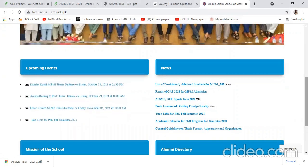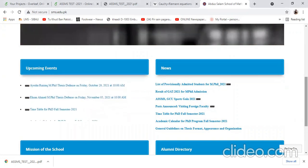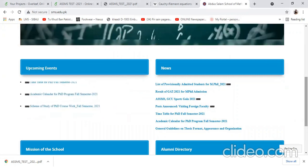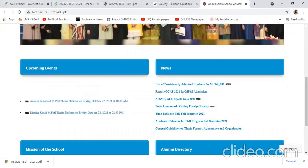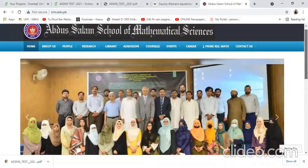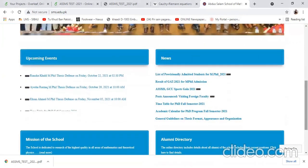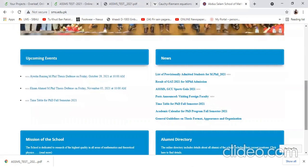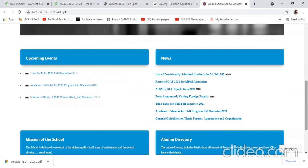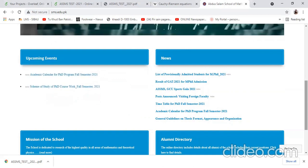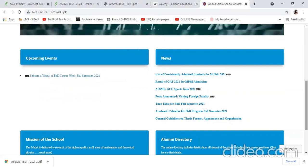Every year they select almost 20 to 21 students for M.Phil and PhD programs. For further information you can go to their website. They give you fully funded scholarships and every month they give you a stipend of maybe 16 to 20,000 rupees PKR.